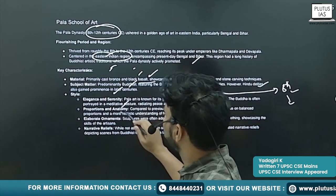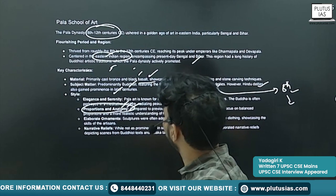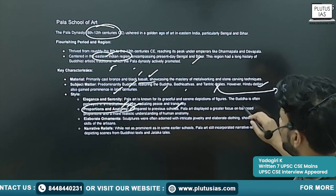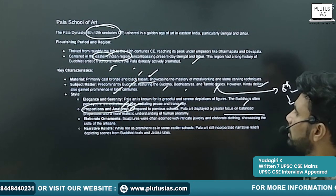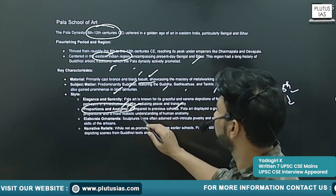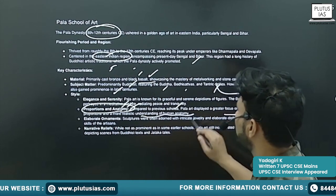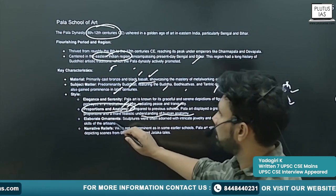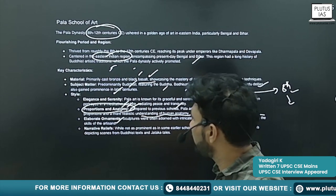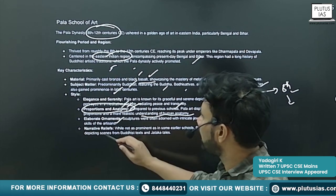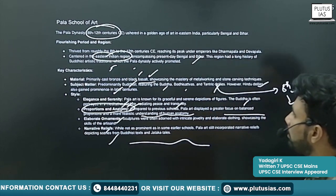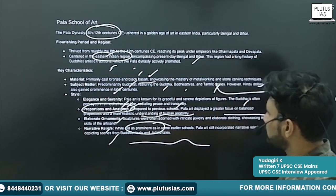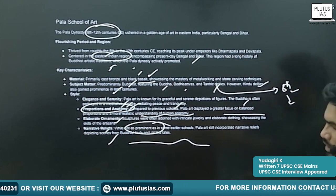Here and there, Hindu deities were also depicted. Style: elegance and serenity were there, and proportions and anatomy were properly maintained. Compared to previous schools, Pala art displayed a greater focus on balanced proportions and more realistic understanding of human anatomy. Elaborate ornaments and narrative reliefs are also found.